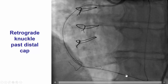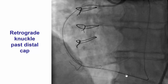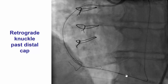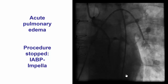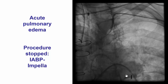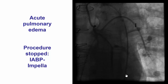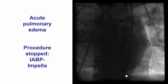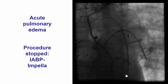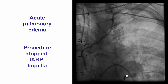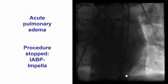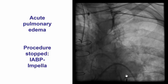However, we could not advance the Corsair Pro further up, and we tried other microcatheters but could not advance them through the occlusion. At this point, approximately one and a half to two hours into the case, the patient developed desaturation and went into acute pulmonary edema. We had to stop the case and place an intra-aortic balloon pump as well as an Impella device, which stabilized the patient. We had to pull all equipment from the LIMA.